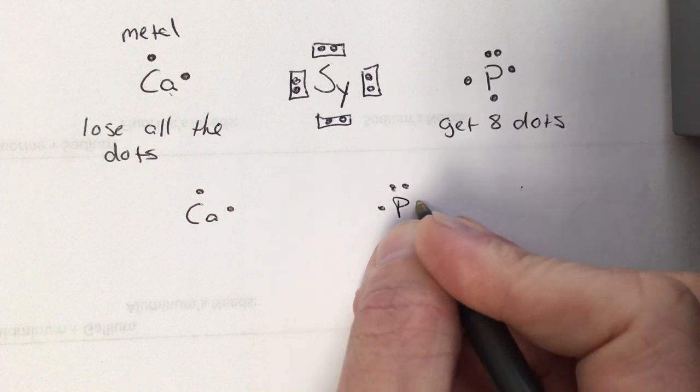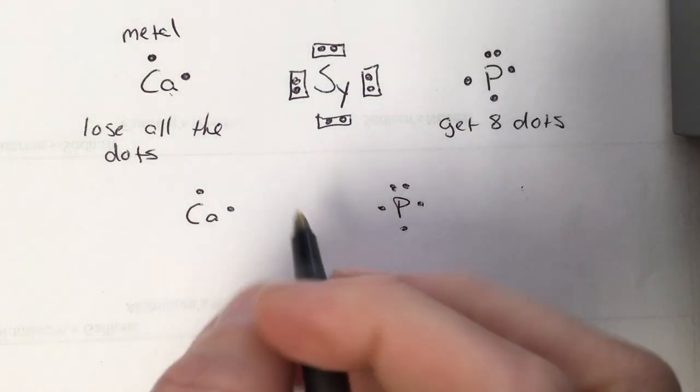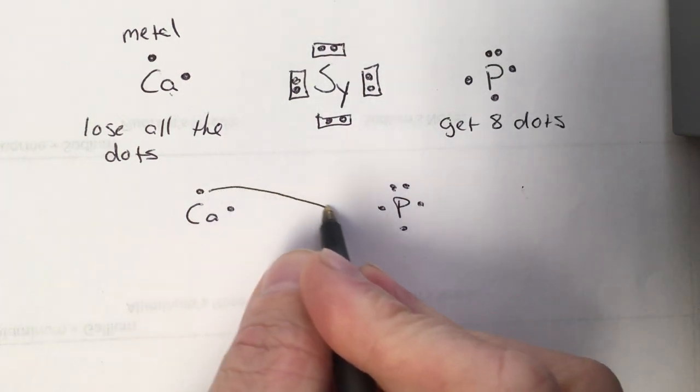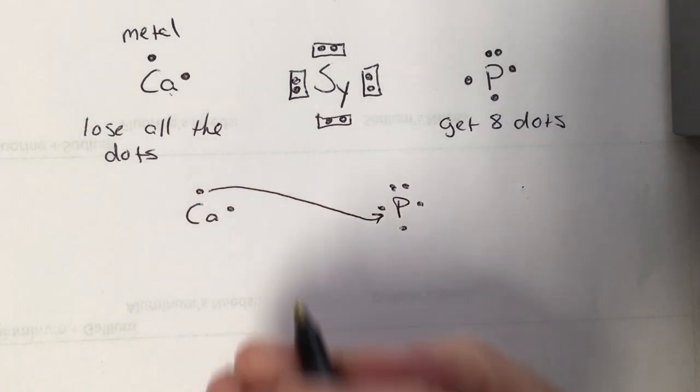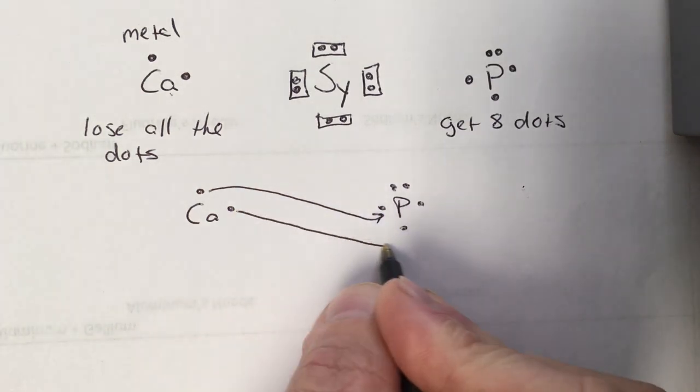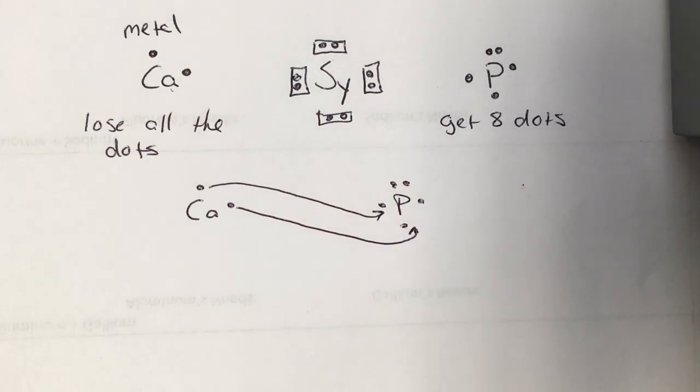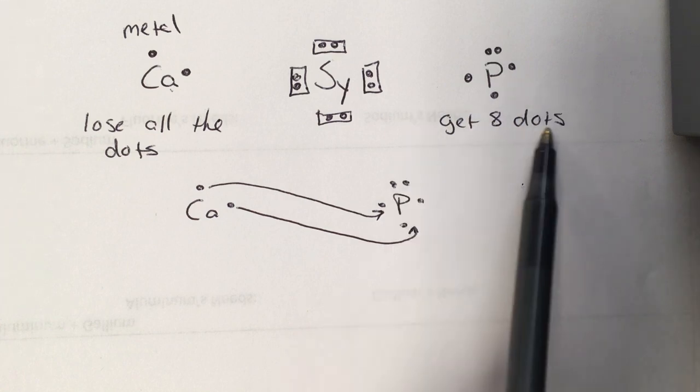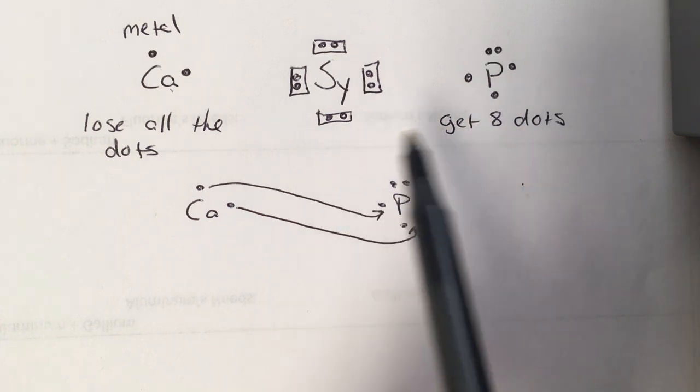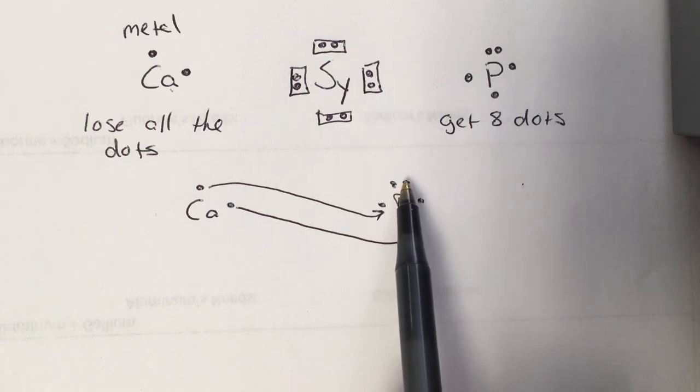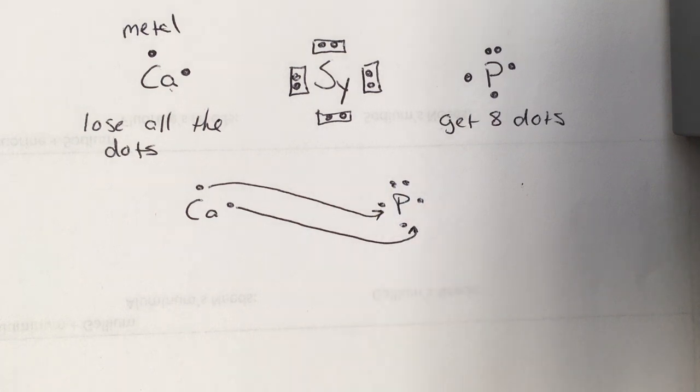So I've got two dots on this calcium that I need to get rid of, and they're going to go towards the single dots in the phosphorus. So one of them is going to go there to pair up with that one, and one's going to go there to pair up with that one. We've transferred our electrons. We look at our metal and try to make sure that it's happy. And again, to be happy, it has to lose all its dots, and that would make the calcium very happy. Then we have to look at our non-metal and see if it's happy. And again, it needs to have eight. It needs to pair up all the lone electrons. At this point, we would have one, two, three, four, five, six, seven. We're still one short.